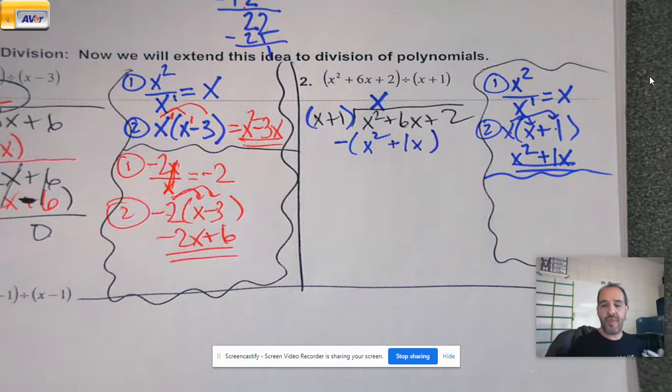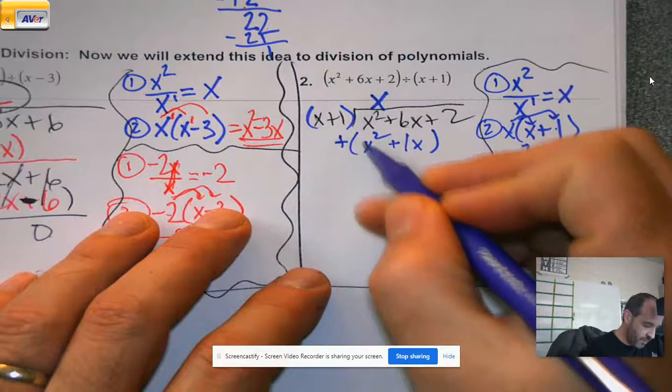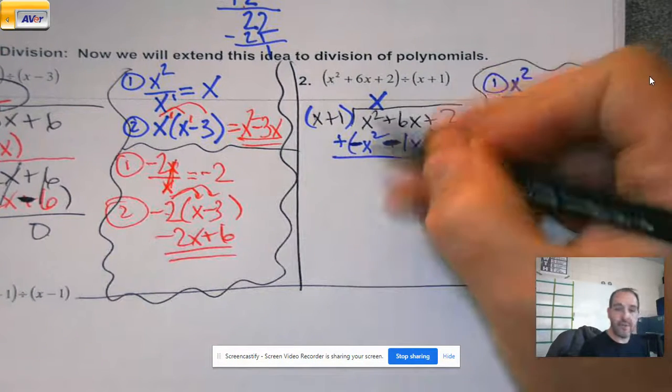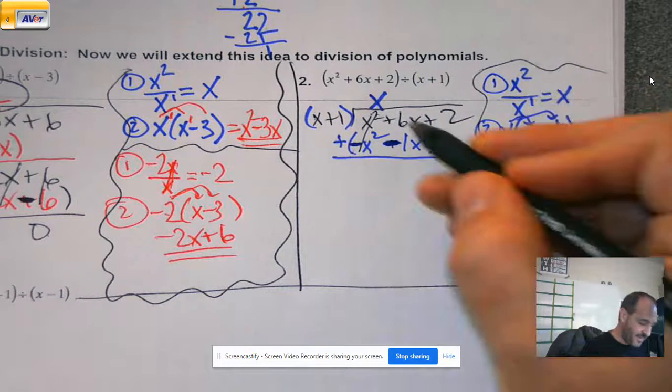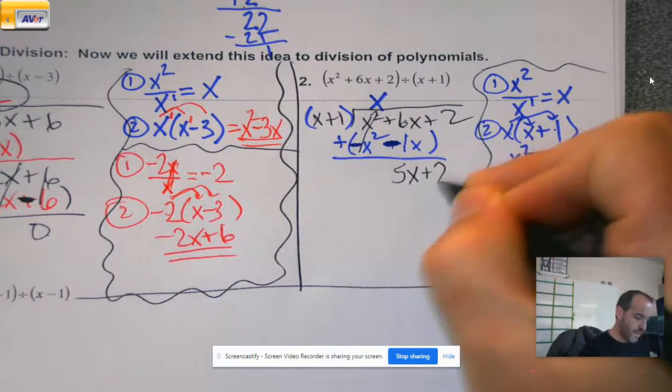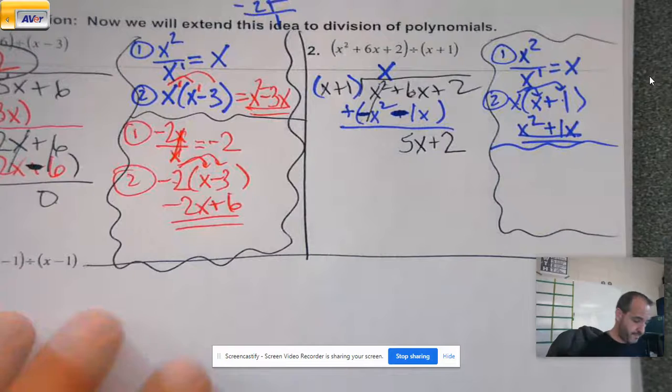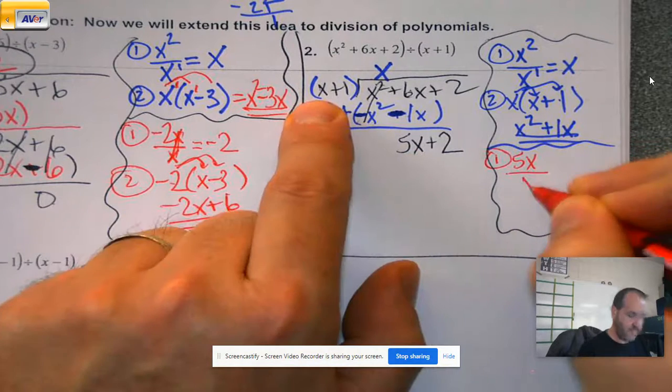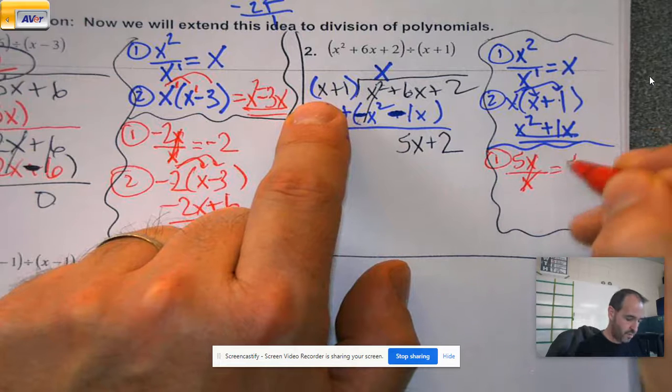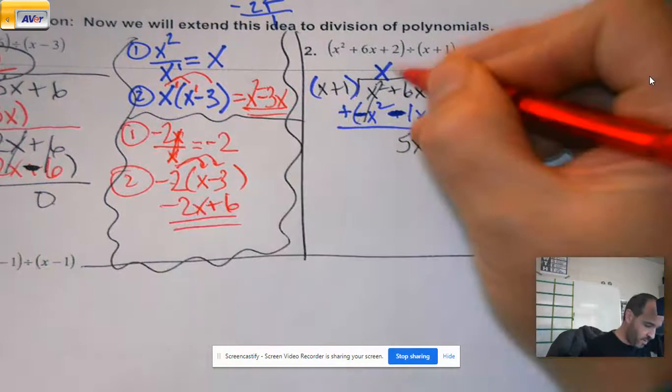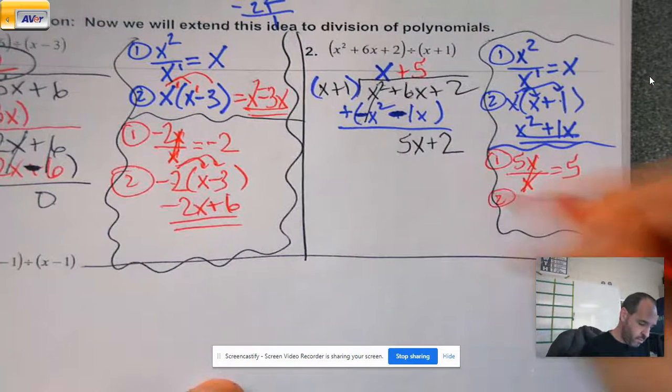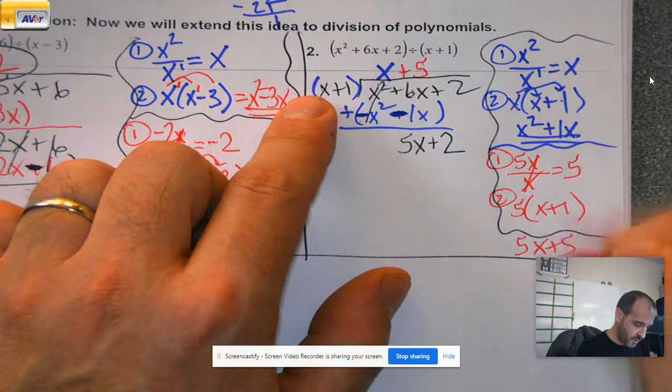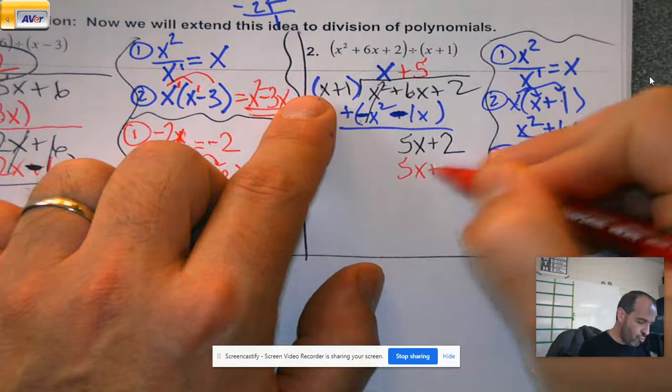x times x is x squared. x times 1 is 1x. And I've had people ask me before, Mr. Hardy, can I just, when I get to this part, switch the signs on both of them right away and add down? Isn't that basically what you're doing already? The answer is yes. If that works better to you, if that's cleaner to you, so it doesn't get confusing, you absolutely can do that. The reason I'm going to continue to keep going this route is, again, on a note sheet, I want you to think about what you're doing. So here, your first term should always cancel. x squared minus x squared. They do. 6 minus 1 is 5x. Bring my next term down. And do the process one more time.